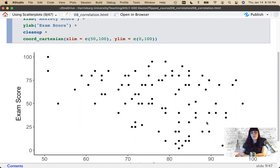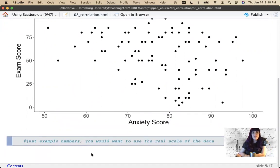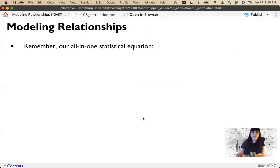This is where coord_Cartesian can be handy to graphically eliminate that portion of the data. We could say the X limit is 50 to 100 and the Y limit is 0 to 100. It still appears somewhat negative. I've got this kind of shape but we might have to run the statistic to see. This is just a reminder that these are example numbers. You would want to do this in the real scale of the data. If your anxiety score only runs from 50 to 100, you shouldn't show us 0 to 50 on the graph. In this case it does run from 0 to 100, I just chopped off half the graph.